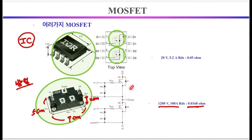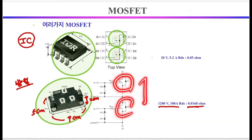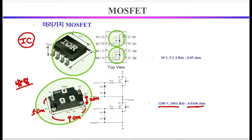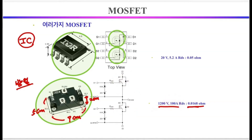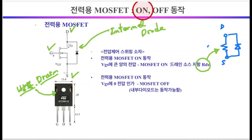The equivalent circuit forming one pole is as shown in this circuit. A MOSFET with a large capacity — that is, 1200V, 100 ampere class — will have a size of 5 centimeters by 9 centimeters, and a height of about 2 centimeters. In this chart, we will look at the on and off operation of the power MOSFET.